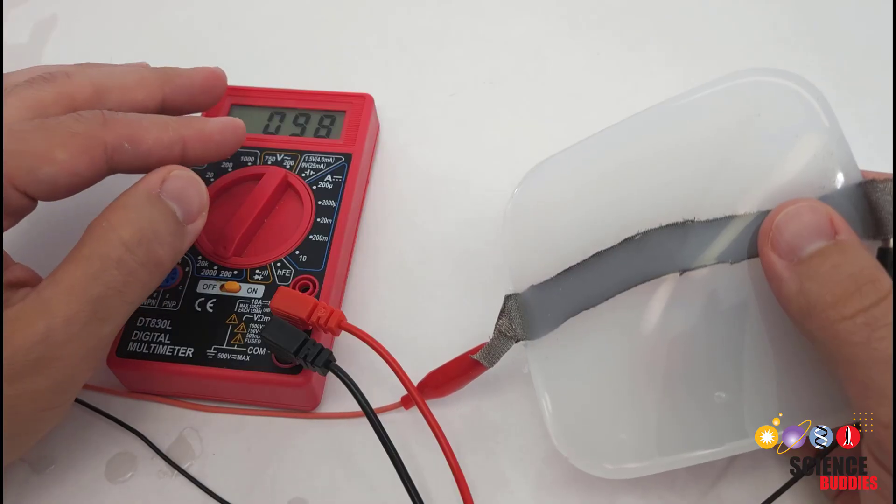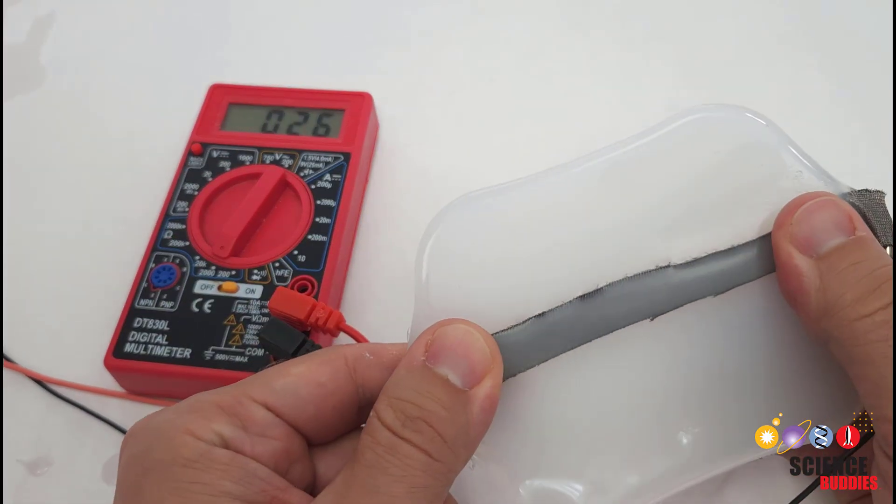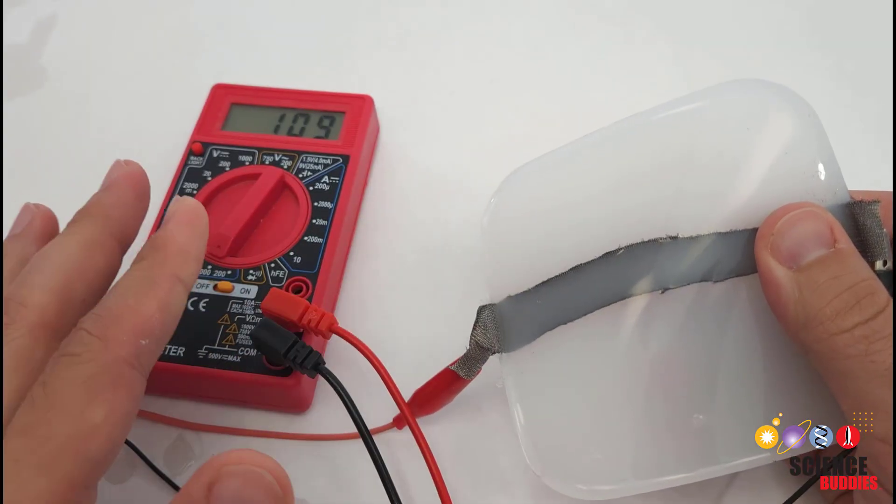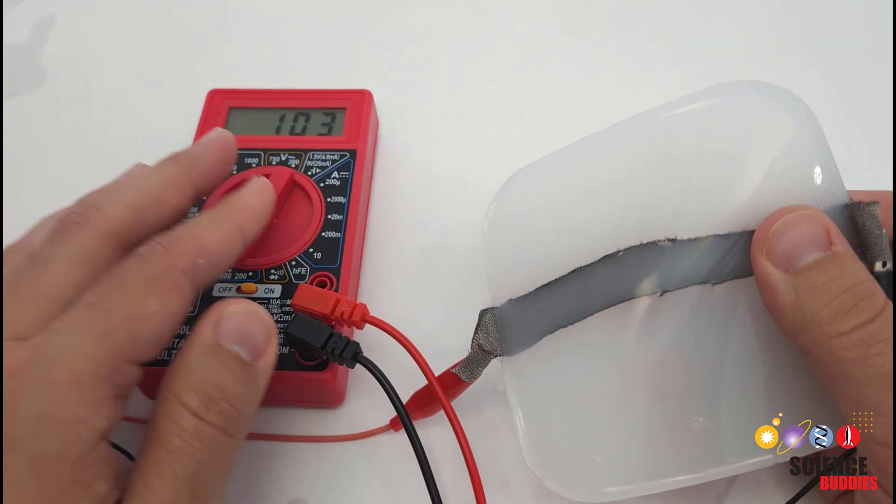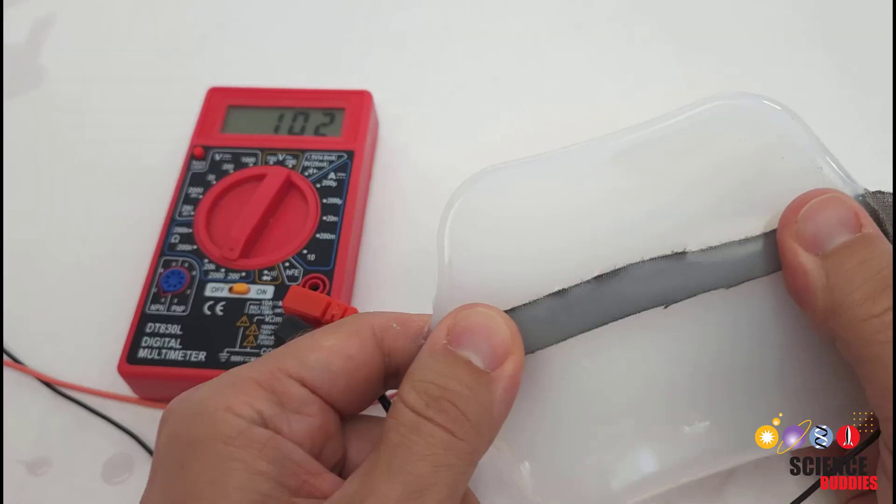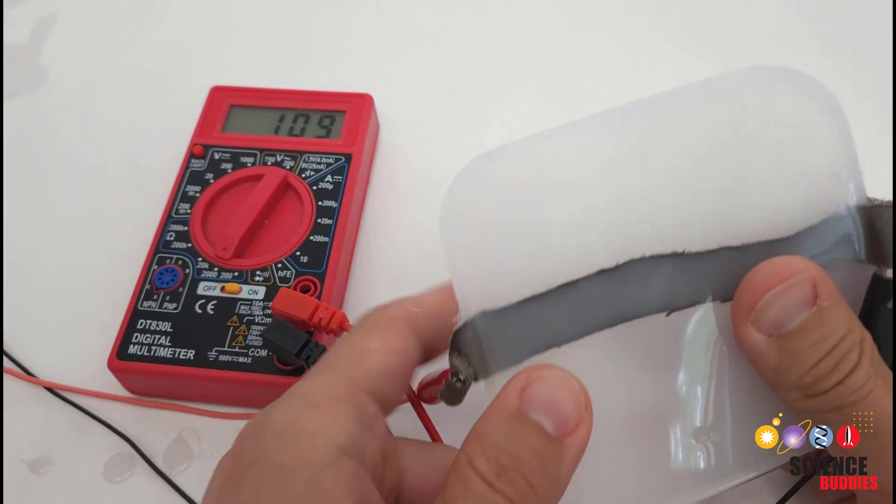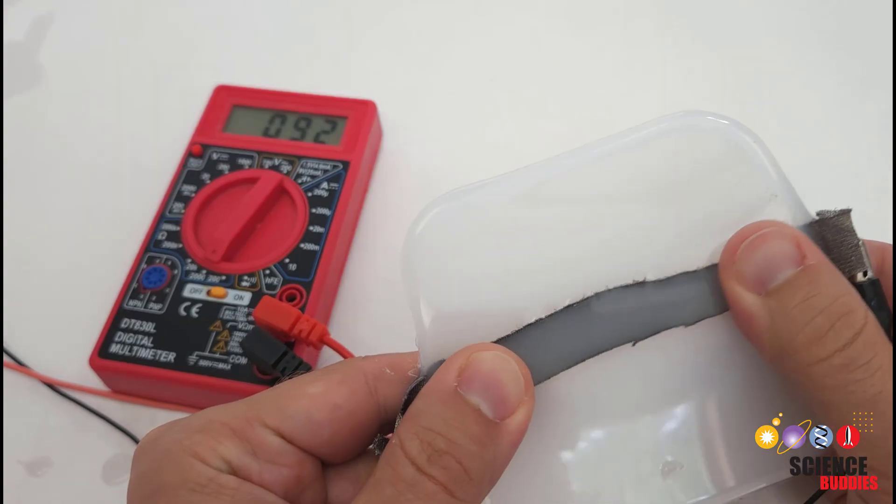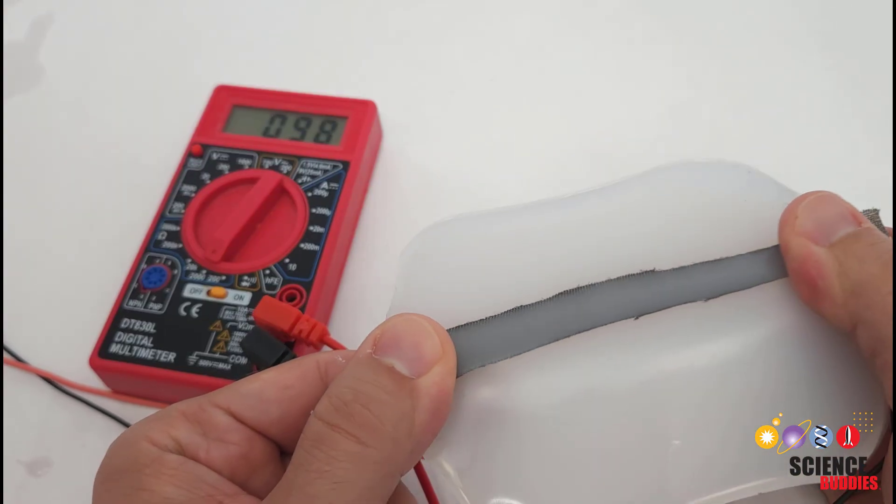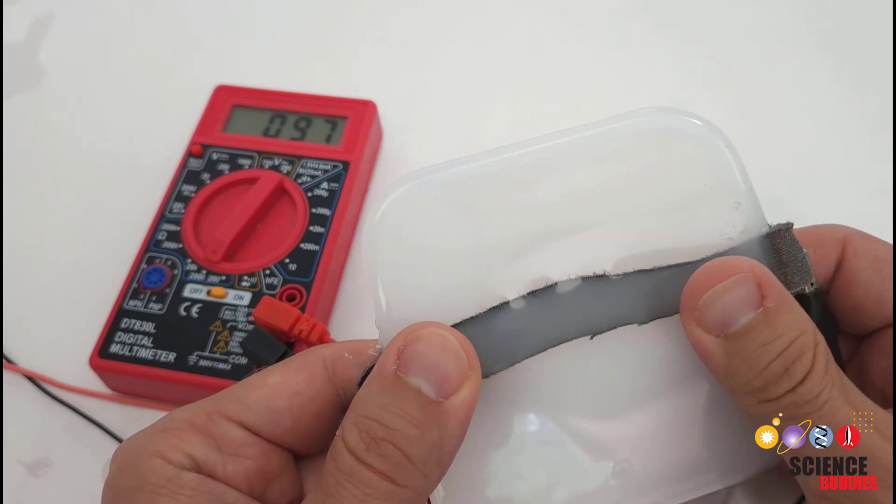So if you would like to define some threshold above or below which you want to activate something like the LEDs you saw earlier in this video, you can kind of use a multimeter to get a rough calibration and then hook it up to a microcontroller and use the stretch or deformation of the skin or sensor to control something.